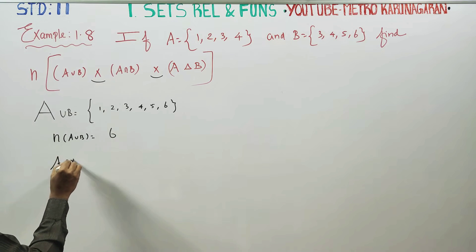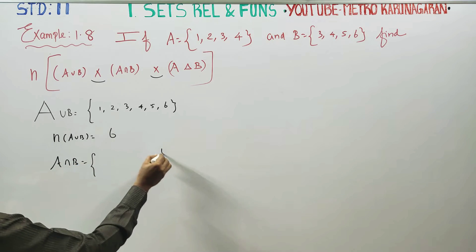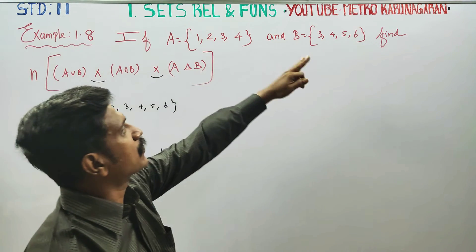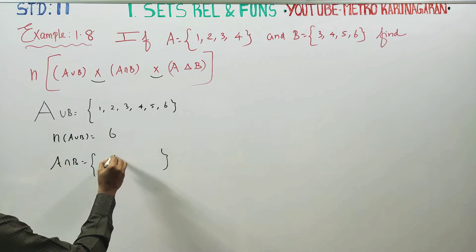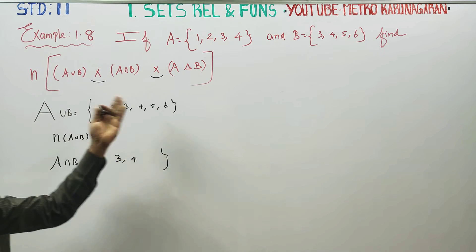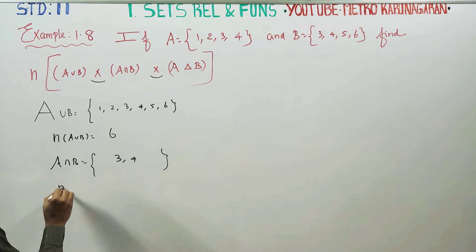A intersection B has the common elements. 3 is common, 4 is common. So A intersection B is equal to 3, 4.